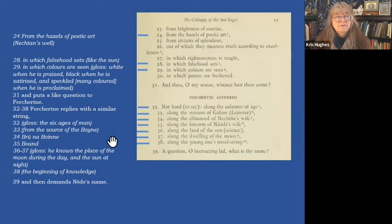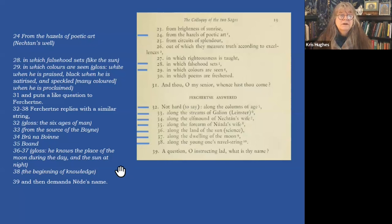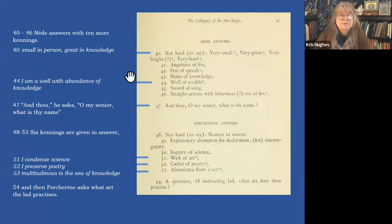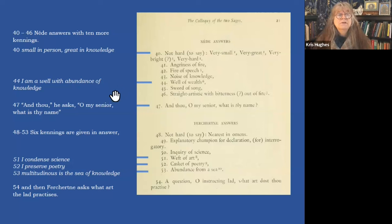'Along the land of the sun' — the gloss says he knows the place of the moon during the day and the sun at night. 'Along the young one's navel string' — in other words, the beginning of knowledge happens at birth. Then Fairkertnia asks: 'What is thy name?' 'Not hard to say: very small, very great, very bright, very hard' — small in person, meaning young; great in knowledge. 'Angriness of fire, fire of speech, knowledge, noise of knowledge, well of wealth' — glossed as 'I am a well with abundance of knowledge.' 'Sword of song, straight artistic with bitterness out of fire.' And thou, O my senior, what is thy name? 'Not hard: nearest in omens, explanatory champion of declaration, inquiry of science, weft of art, casket of poetry — I preserve poetry — abundance from a sea, multitudinous is the sea of knowledge.'